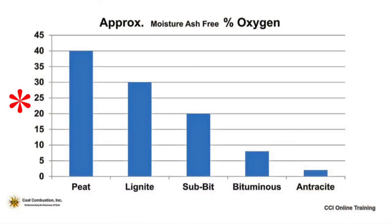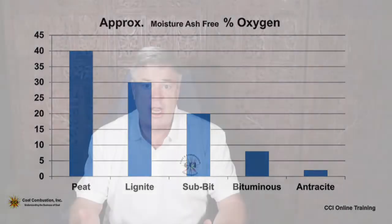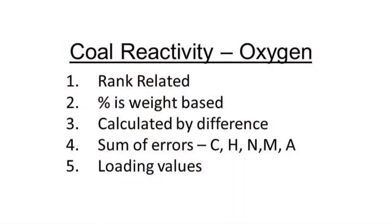One way another scientist told me to think about it: if a coal has 20% moisture-ash-free oxygen in it, and air is 21% oxygen, that coal actually has its own air associated with it. So when you see moisture-ash-free oxygen values in the 20–30% range, these coals essentially contain their own oxygen and don't need a lot of outside air to self-heat. The oxygen content from the laboratory is a weight percentage basis, not correlated to calorific value, and it's calculated by difference — so like fixed carbon, it carries the sum of the errors of moisture, ash, sulfur, carbon, hydrogen, and nitrogen measurements.